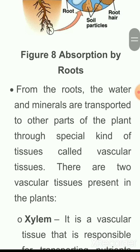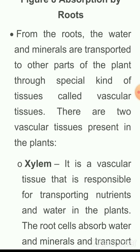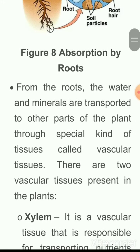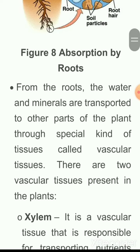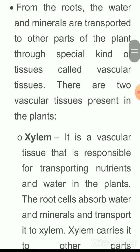From the root, the water and minerals are transported to other parts of the plant through special tissues called vascular tissues. Just as our body has veins and arteries for transportation, plants also have two types of vascular tissues: xylem and phloem.